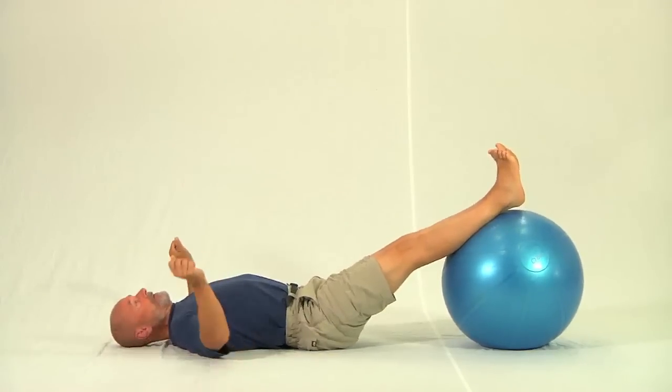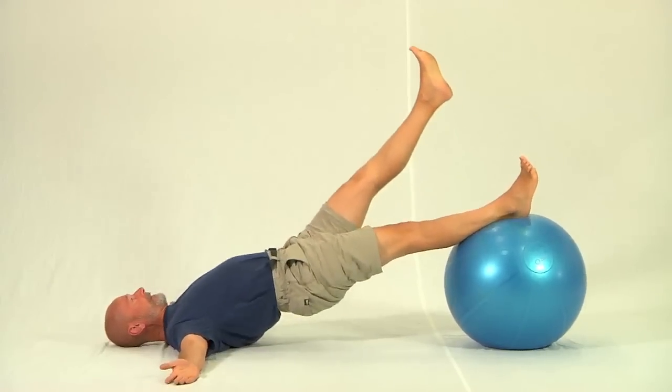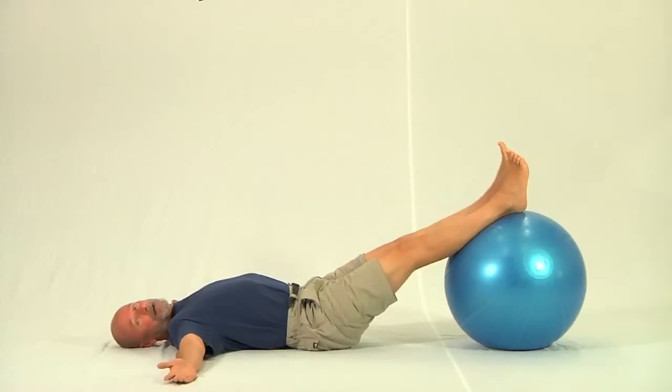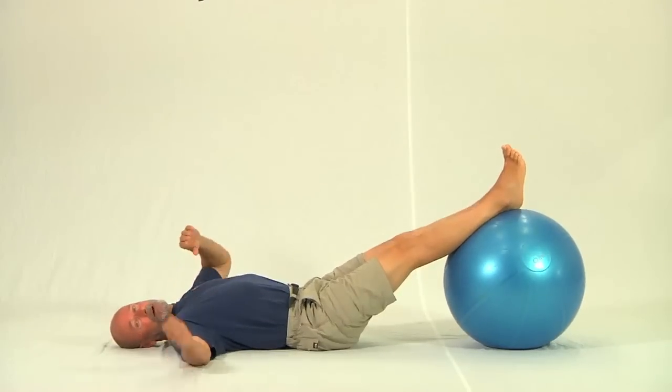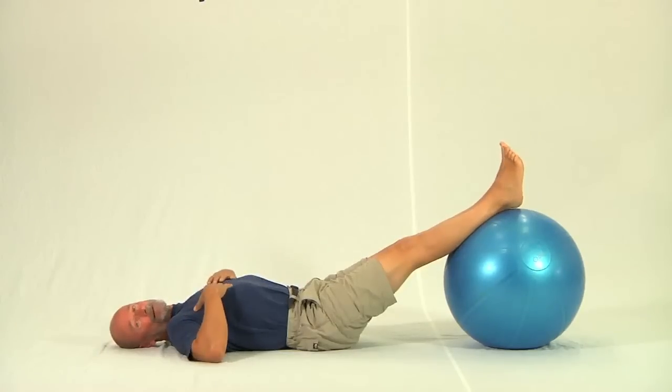You can also do that from the floor when you get strong enough. This is what the exercise looks like, and then back down. Each time what we're trying for is to have the thigh and the trunk in a perfectly straight line with good spinal alignment, because this too is a spinal alignment drill.